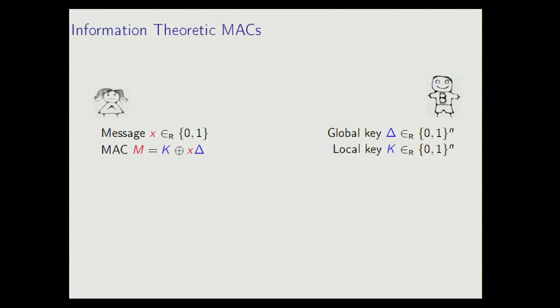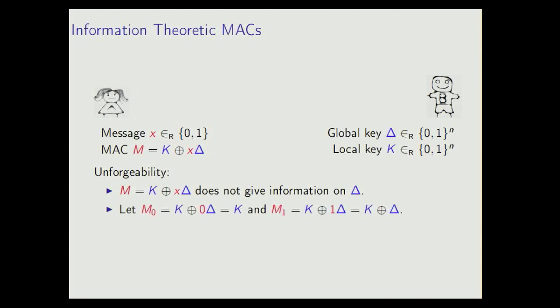Let's look at these MACs that we use. The setting is that we have Bob here will have some global key delta, which is going to be a random string, the length of the security parameter. And then, for every message that Alice has, x, Bob is going to have a local key k, which is also just going to be a random string. And the MAC is then k XOR x times delta. And to argue that these MACs are unforgeable, let's first see that the MAC does not actually give us any information on delta. But if we let M0 be a MAC corresponding to a 0 message, and M1 be a MAC corresponding to a 1 message, we see that if we know both these MACs, we can easily compute the global key. So somehow, intuitively, forging a MAC should be as hard as guessing this global key.